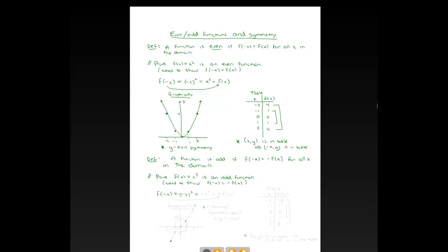Now let's evaluate. Negative x cubed is negative x times negative x times negative x. Negative times negative times negative is negative, and x times x times x is x cubed. So the negative sign copies down, and x cubed — if you look above — is just another name for f of x. So we have f of negative x equals negative f of x. That's exactly what I needed to show, so I just proved it was odd.